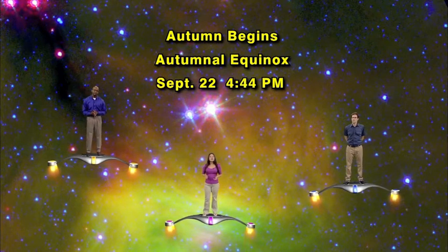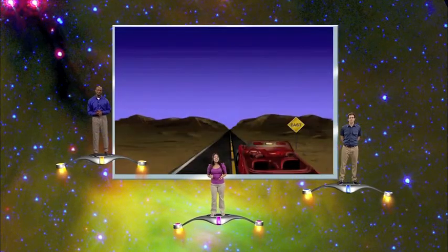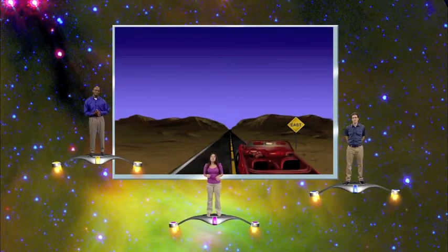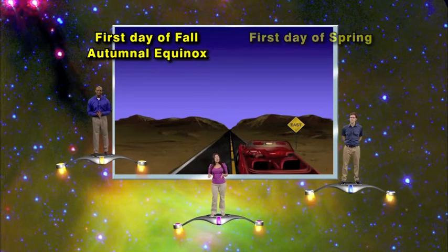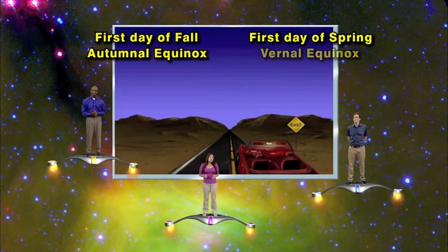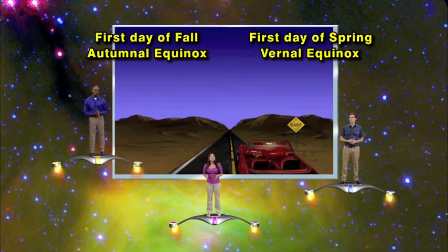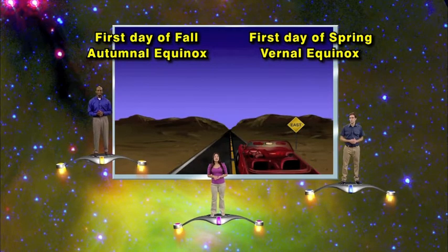So once again, get ready for some in-your-face sunrises and in-your-face sunsets, because every year on the first day of fall, which astronomers call the autumnal equinox, and the first day of spring, which astronomers call the vernal equinox, our sun will rise directly due east and set due west.